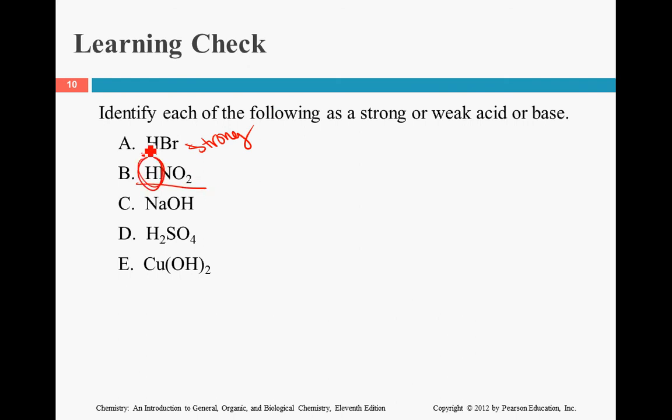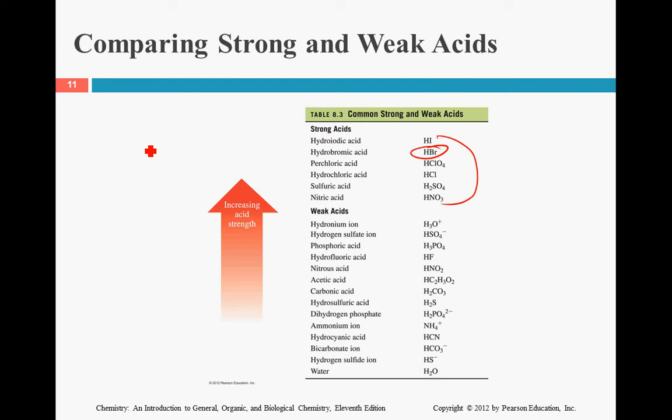HNO2—here's our hydrogen, so we know it's an acid. So we need to find HNO2. There's HNO3. That's not the same. HNO2 is right here. It's considered a weak acid.